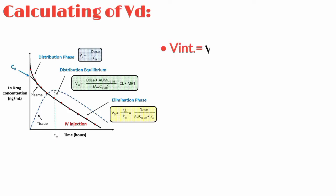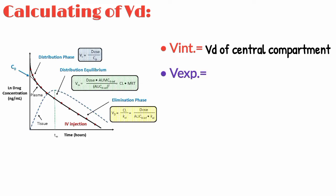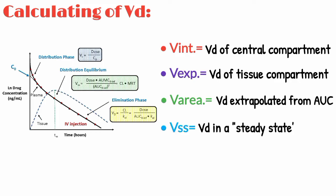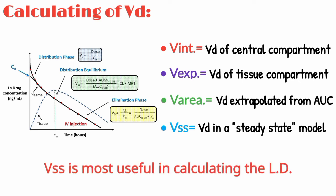V initial is equal to VD of the central compartment from the rapid distribution phase. V extrapolated is equal to VD of the tissue compartment from the elimination phase. V area is equal to VD extrapolated from the AUC of the concentration curve. V SS is equal to VD in a steady state model, the most useful in calculating the loading dose.